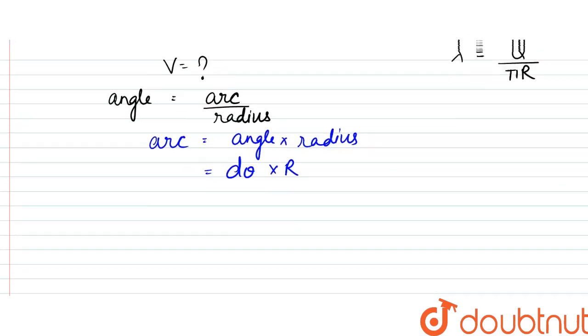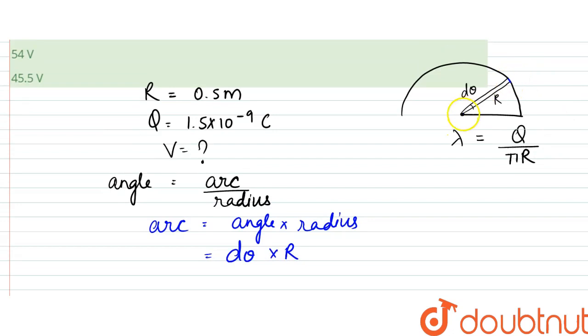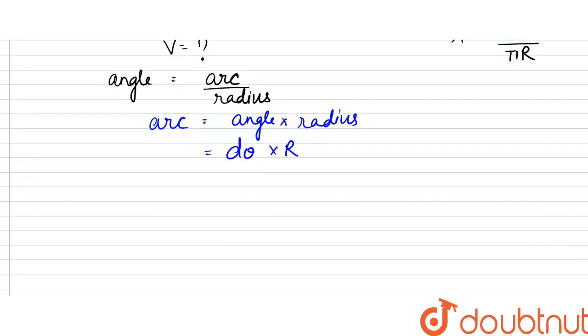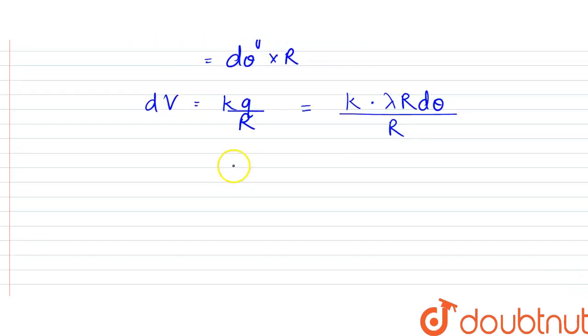The potential due to small element at center O would be dV, which is equal to kq/r. That is equal to k × λ × r × dθ upon r. So that can be written as k × λ × dθ, that is equal to dV.